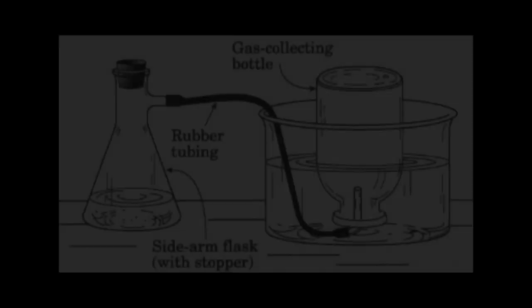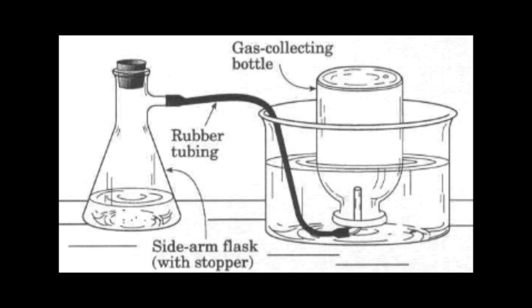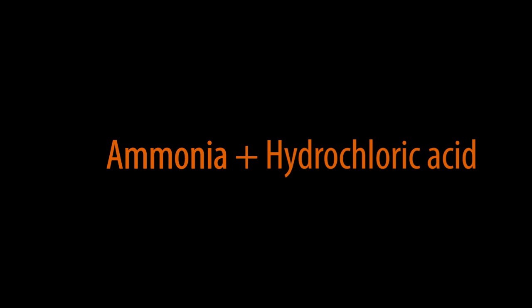Priestley devised a new apparatus, the pneumatic trough, that allowed him to collect gases over mercury. No gases are soluble in mercury, so it had major advantages over water. However, mercury is 13.6 times heavier than water, making it difficult to pass a small amount of gas through it. He solved this problem in an innovative way: instead of passing the gas through the mercury, he generated it over the mercury. He floated various materials over mercury that would decompose and generate gas upon being heated, and sealed a glass vessel over the top. He heated them with a magnifying glass by focusing the sun's rays on them. Had he not done this over mercury, he could not have discovered ammonia and hydrochloric acid, as these gases are highly soluble in water.